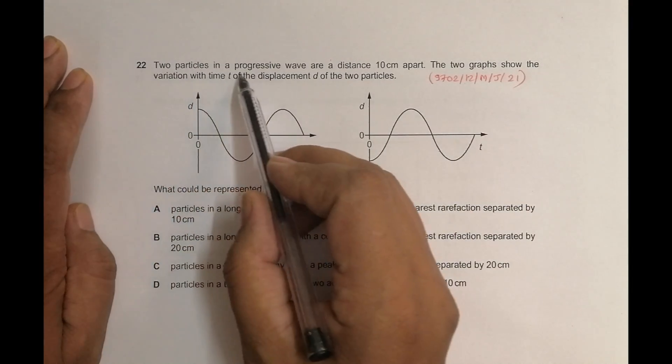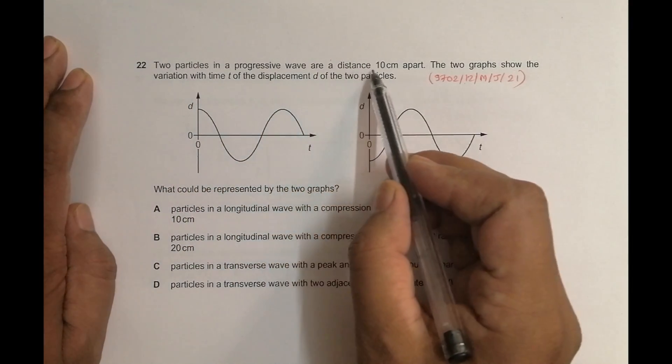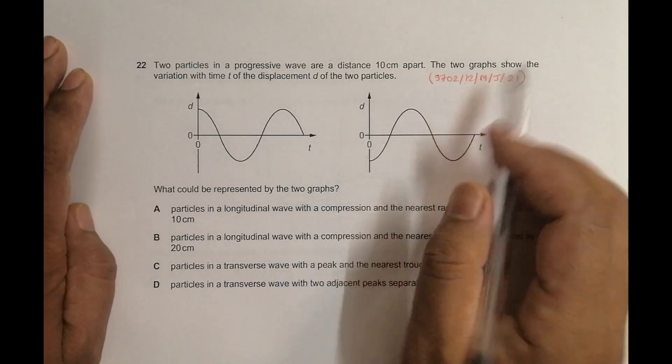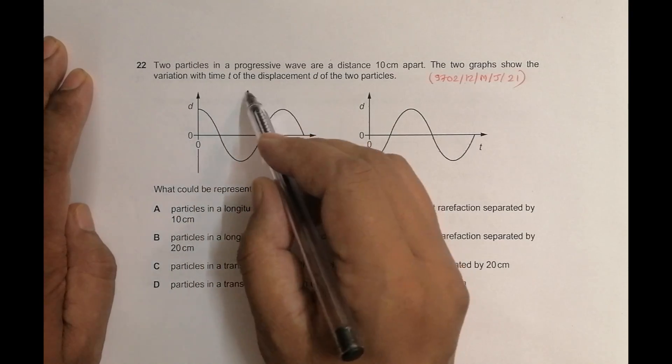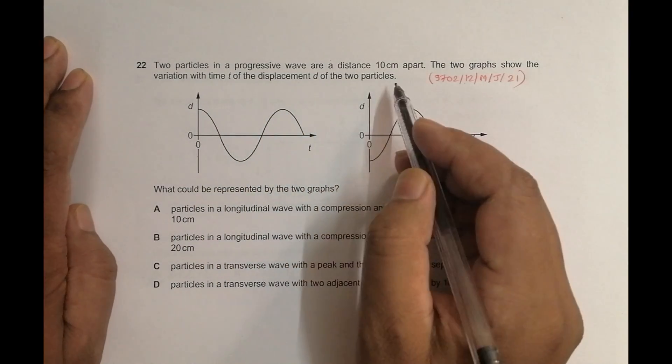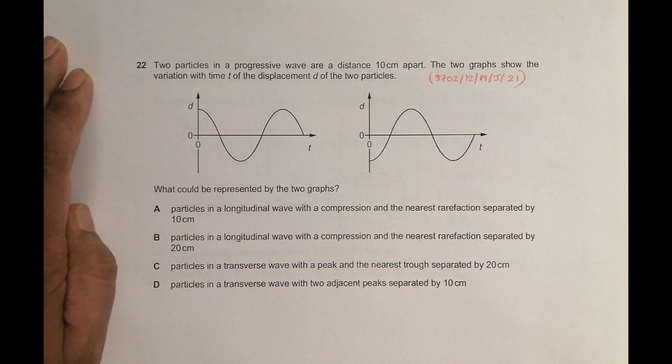It says two particles in a progressive wave are a distance of 10 cm apart. The two graphs show the variation with time t of the displacement of two particles. So these graphs show the displacement of two particles.